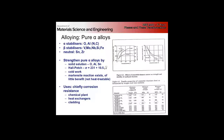Pure alpha alloys are used primarily for corrosion resistance, particularly high temperature corrosion. If we look at the strength curves, they follow the trends we expect to see for solid solution and interstitial strengthened metals.